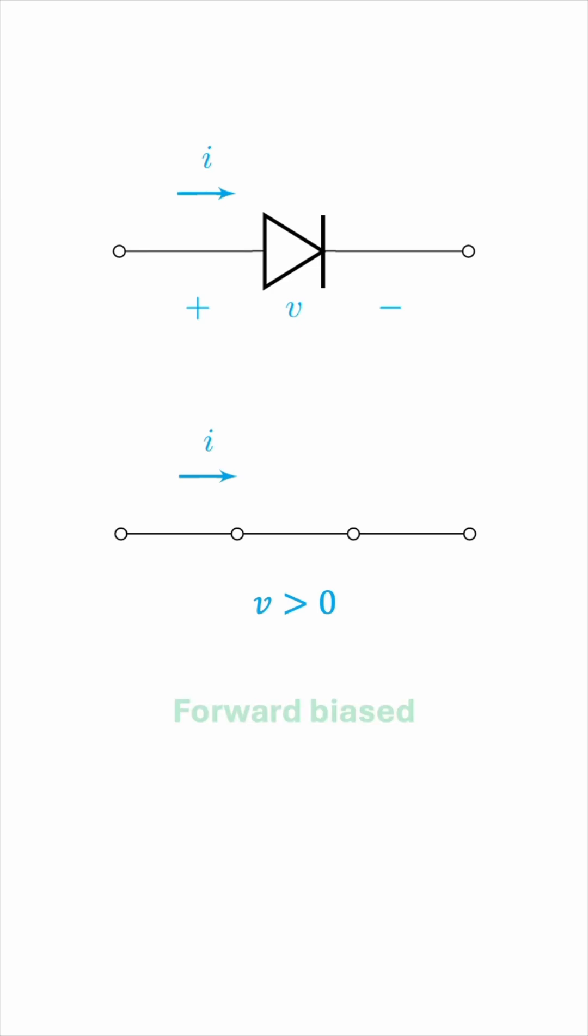Then it is said to be forward biased, or switched on. If we were to look at a graph of current versus voltage, we would get something like this. Almost nothing when V is negative, but once V starts getting positive, the current increases rapidly.